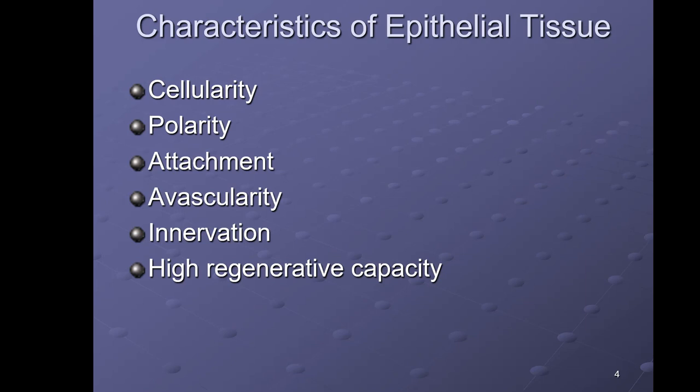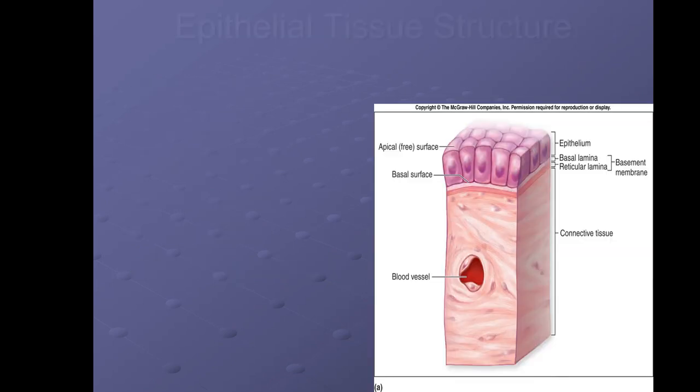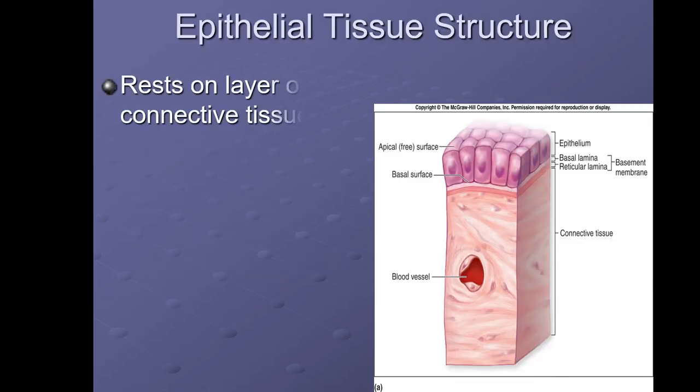Innervation means there is nervous tissue that innervates the epithelial tissue — for example, you have nerves in the skin so you can feel things. High regenerative capacity means epithelial tissues can regenerate really quickly, their cells can divide and reproduce quickly. Think of your skin: if you get a scrape or a cut, it usually heals pretty quickly.